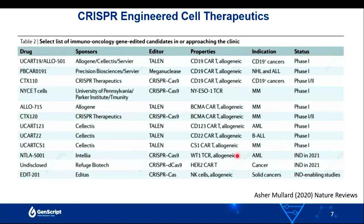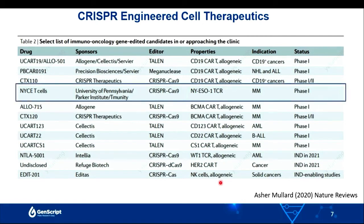CRISPR tools have been widely used in fields from basic genetic research to gene therapy, cell therapy, cell line engineering, animal model generation, agriculture, target screening, and epigenetic research — and were also very important in 2020 with the COVID-19 outbreak, where fast CRISPR-based detection tools showed great power to prevent virus spread. The inventors Emmanuel Charpentier and Jennifer Doudna received the Nobel Prize in Chemistry in 2020. CRISPR has also been used to generate cell therapeutics for clinical use.